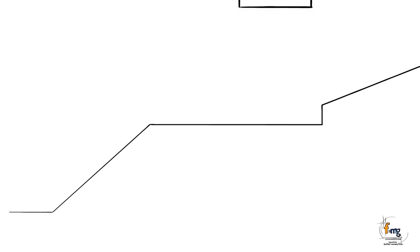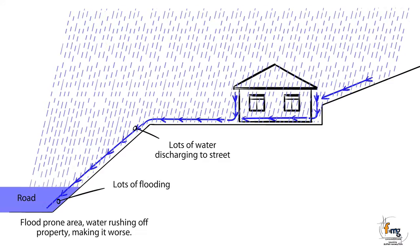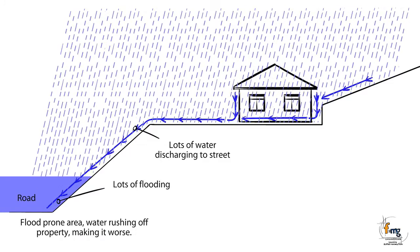Councils have different policies regarding storm water requirements, so it is important to have a storm water system designed by someone like FMG. Some council areas are prone to flooding. Because of this, some councils may require the installation of detention tanks to slow down the flow of the storm water to the street.